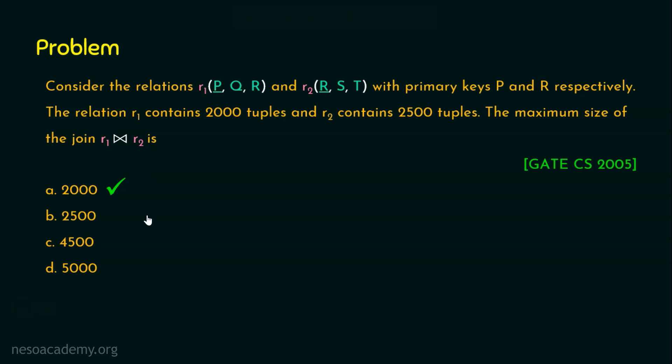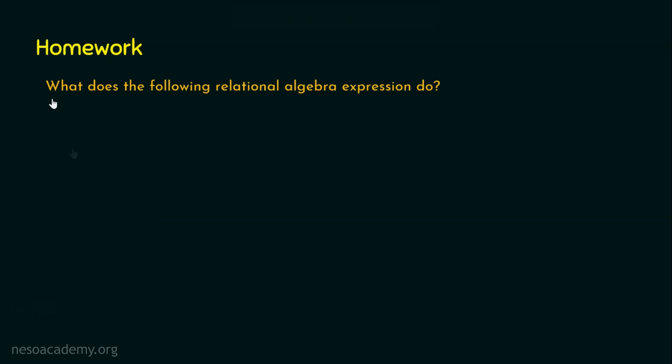Before we sign out, let's see the homework question. The question is, what does the following relational algebra expression do? And the expression is sigma, the condition is amount greater than 1200, and the relation is loan. And the options are: